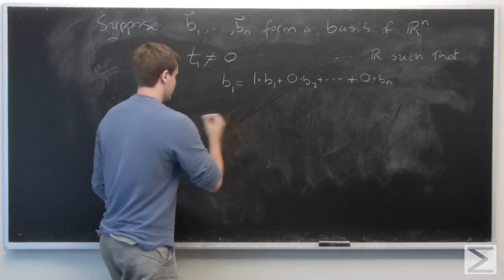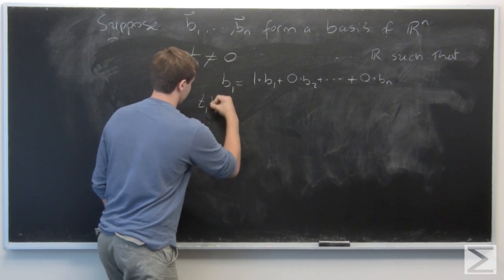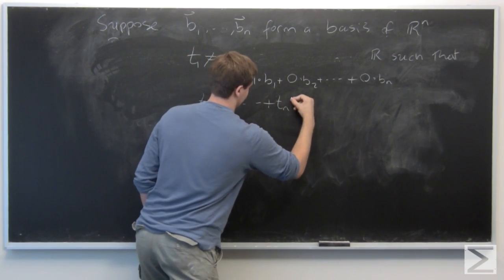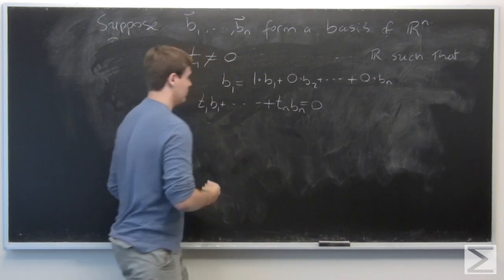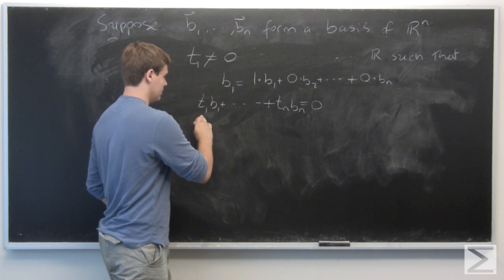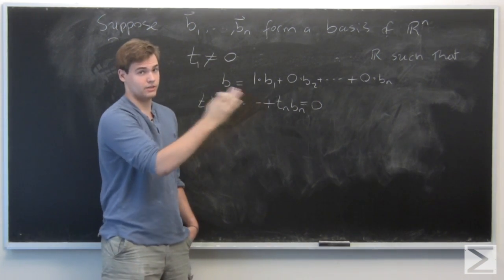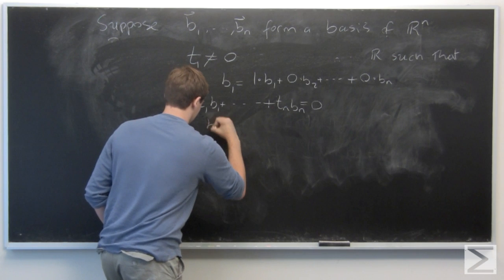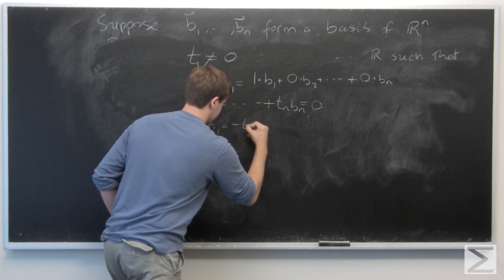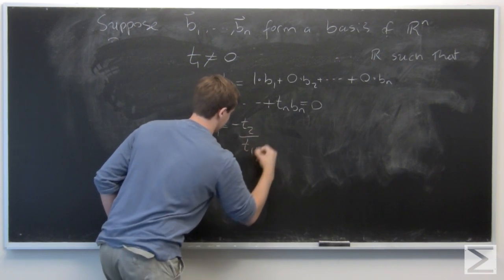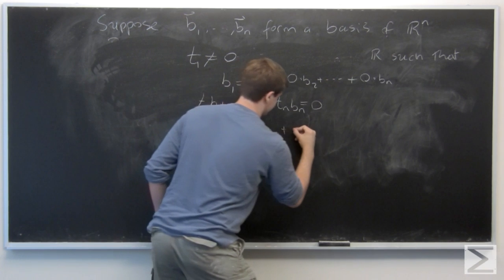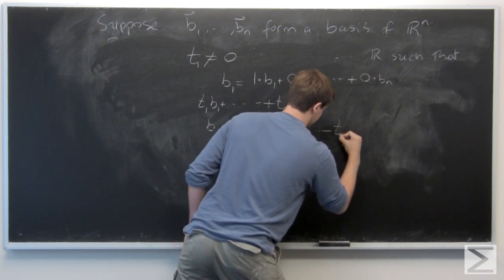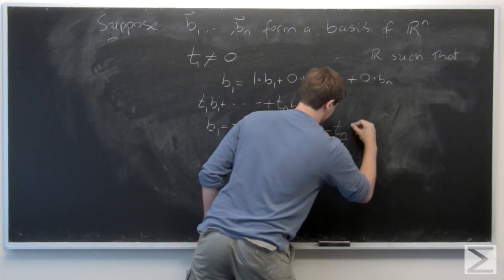However, since we have that T₁B₁ plus dot dot dot plus TₙBₙ is equal to 0, we can move T₁B₁ to the other side and divide by T₁ because it's not 0 by assumption here. So we get B₁ is equal to minus T₂ divided by T₁ B₂ plus dot dot dot minus Tₙ over T₁ Bₙ.